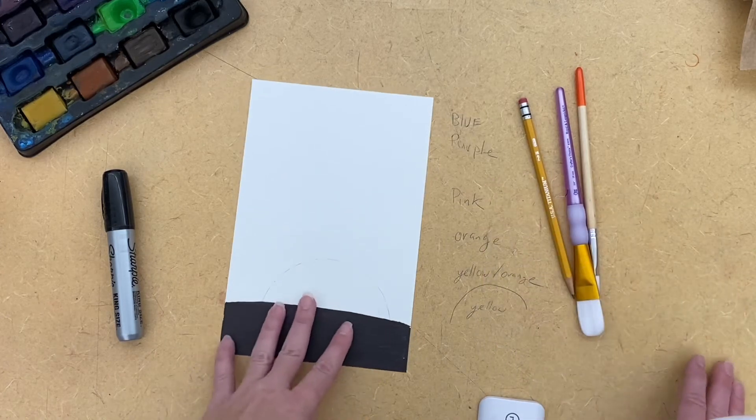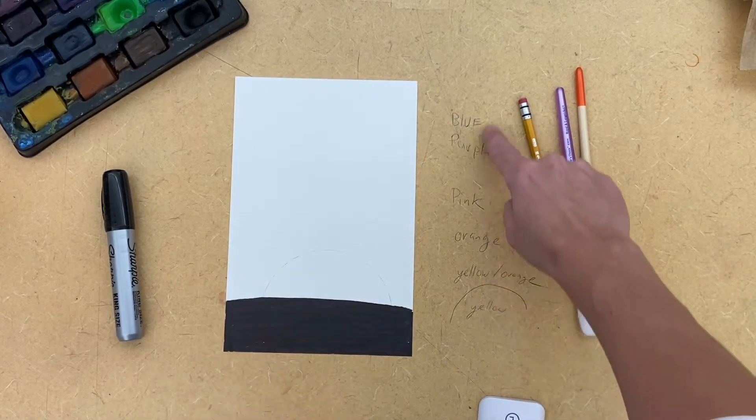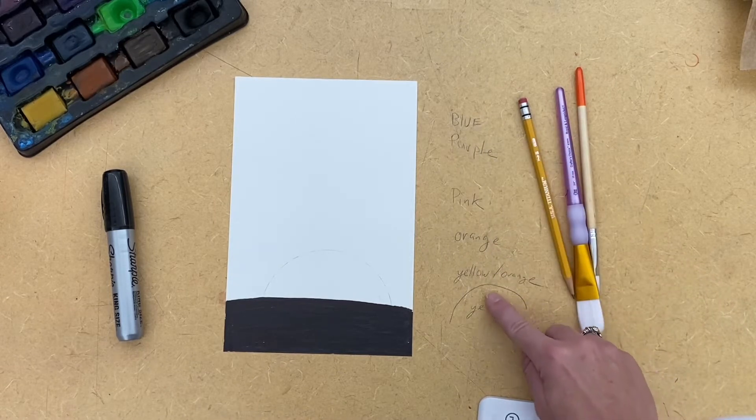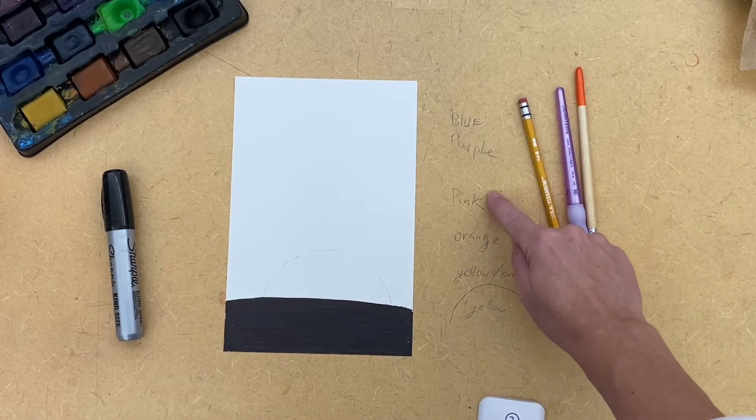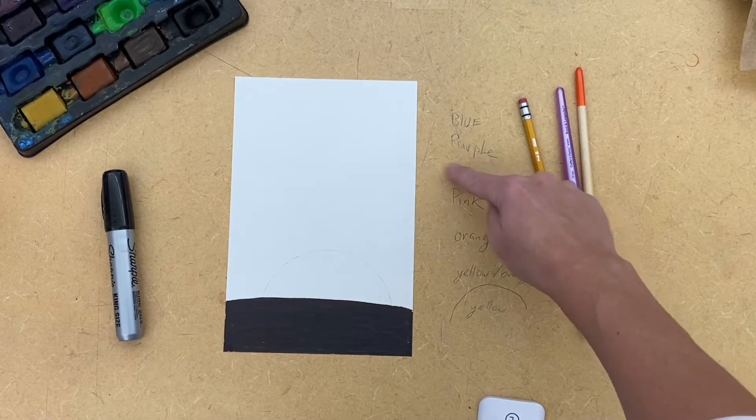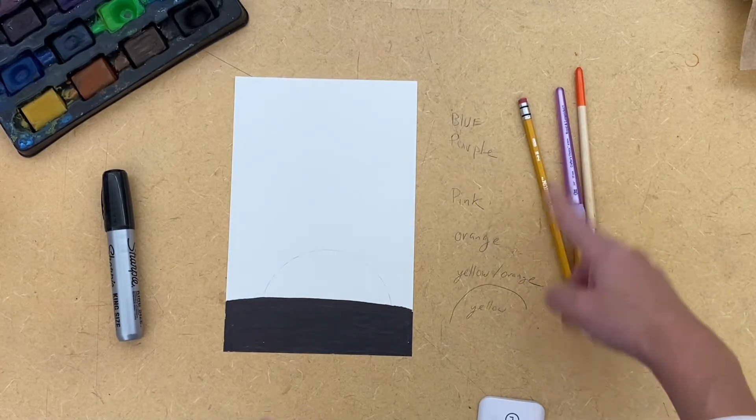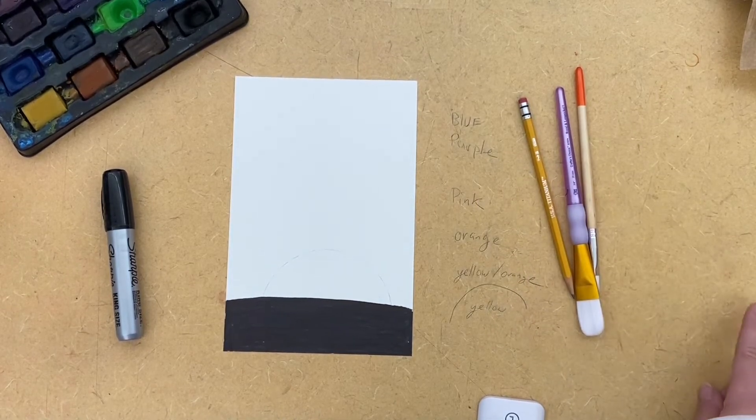Sometimes when you're painting, you might not get to the purple or the blue. Maybe your sunset's going to be yellow to yellow-orange to orange to pink, and then maybe it's going to stop at pink. And that's okay, too. But I think the more colors you can do, the better.